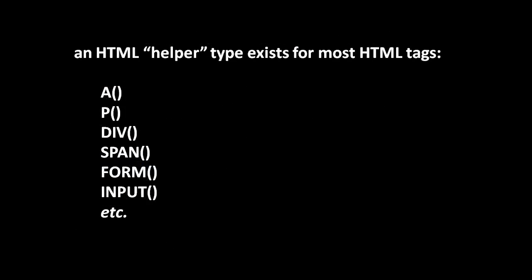As another convenience, Web2Py provides what it calls HTML helper types. These are essentially Python classes which represent the various elements that make up an HTML document. Each class represents a different kind of HTML tag — A for an anchor tag, P for a paragraph tag, div for a div tag, span for a span, form for a form, input for an input, etc. — basically all the commonly used HTML tags.